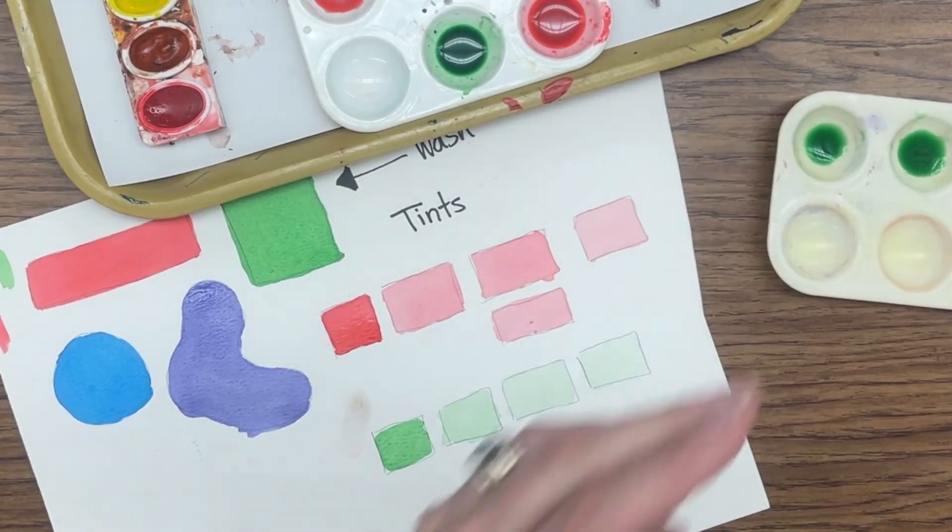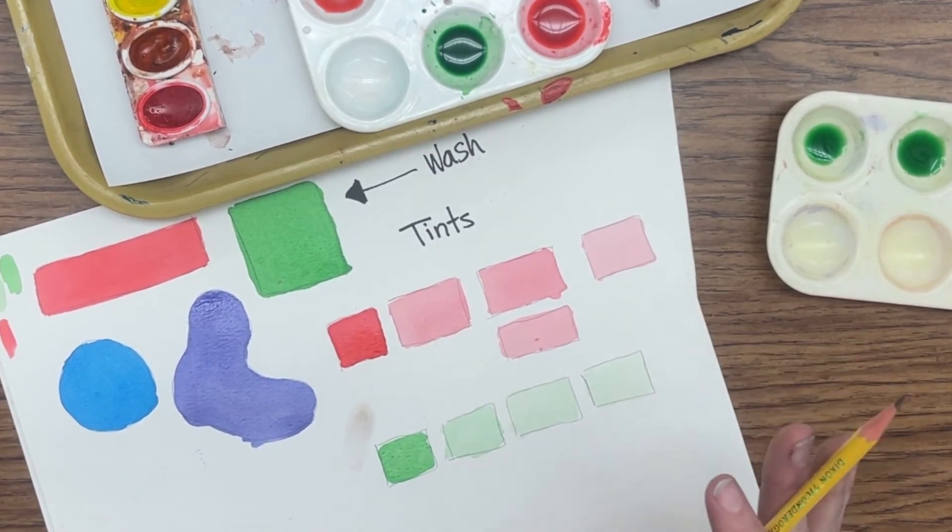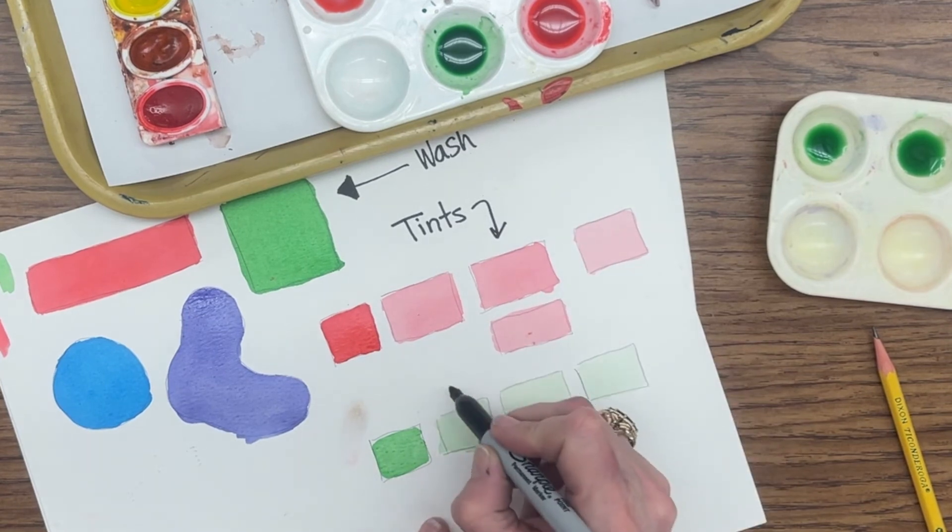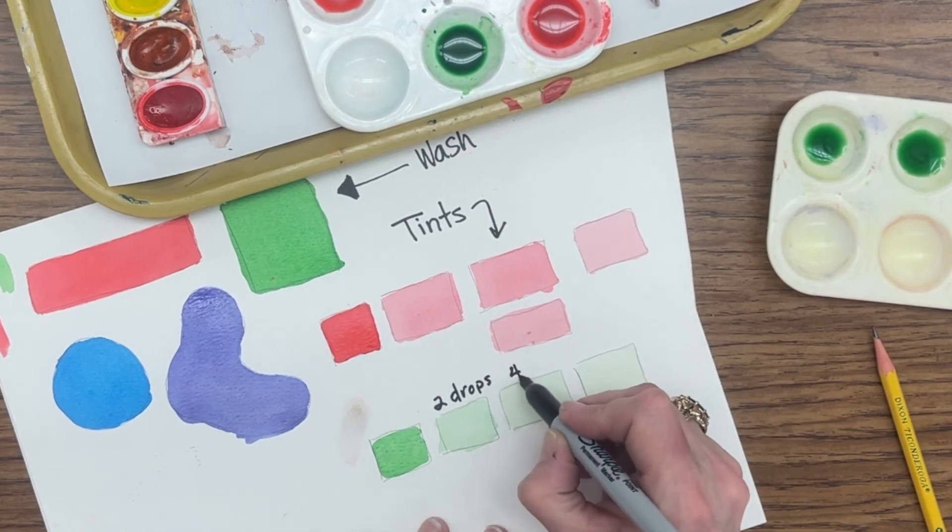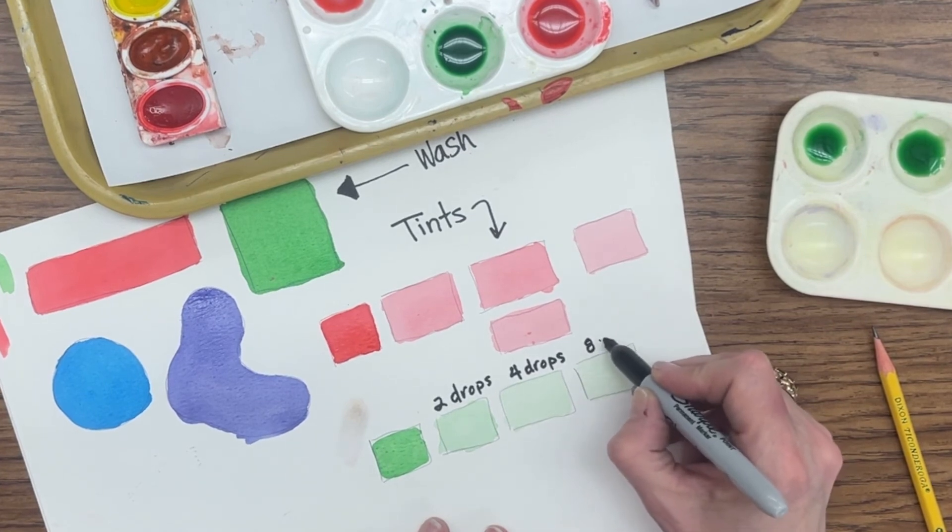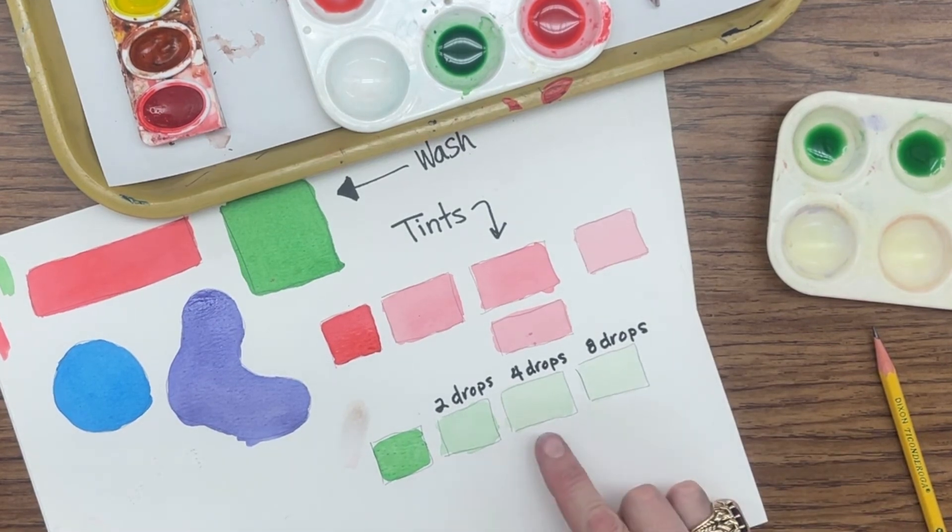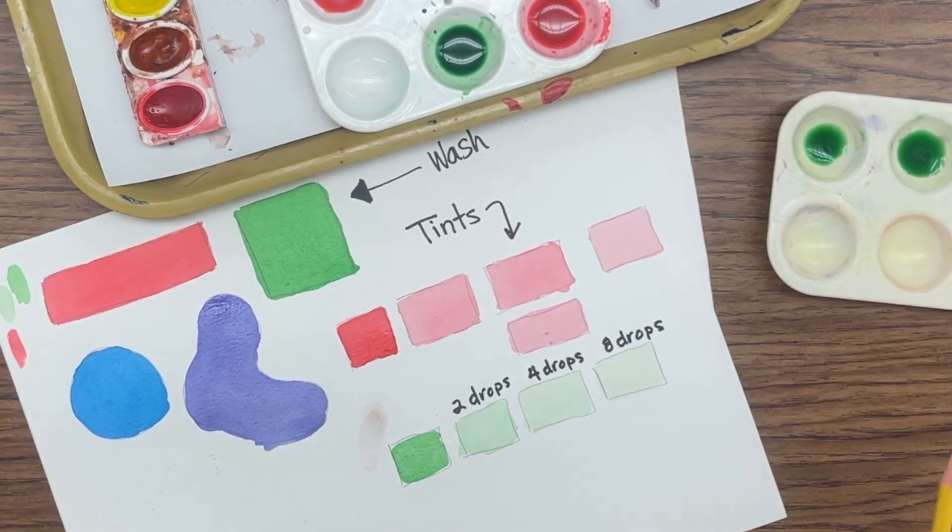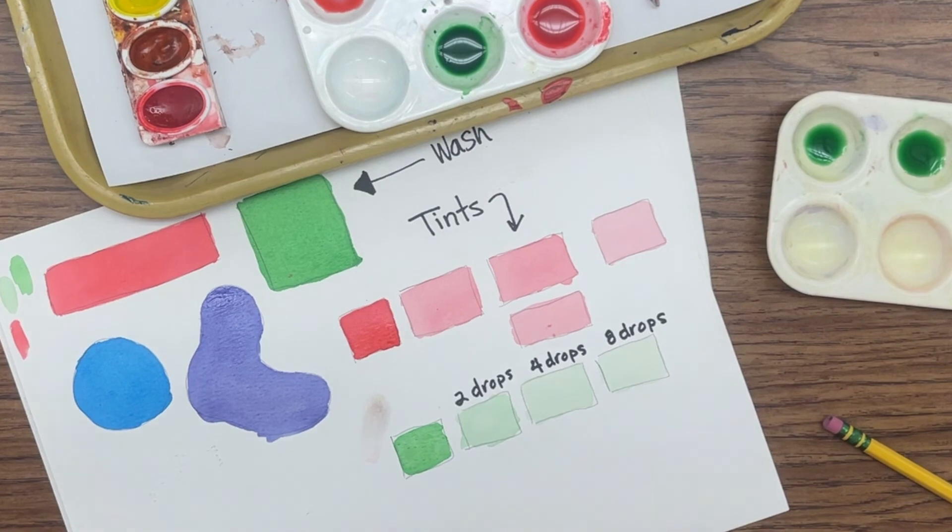Practice your tints four times with four different colors. And these are tints. One with two drops of water. One with four drops of water. And one with eight drops of water. And we can see the color showing up more as they dry out, which is what should happen. When you finish that, then you're ready for the next part. See you soon.